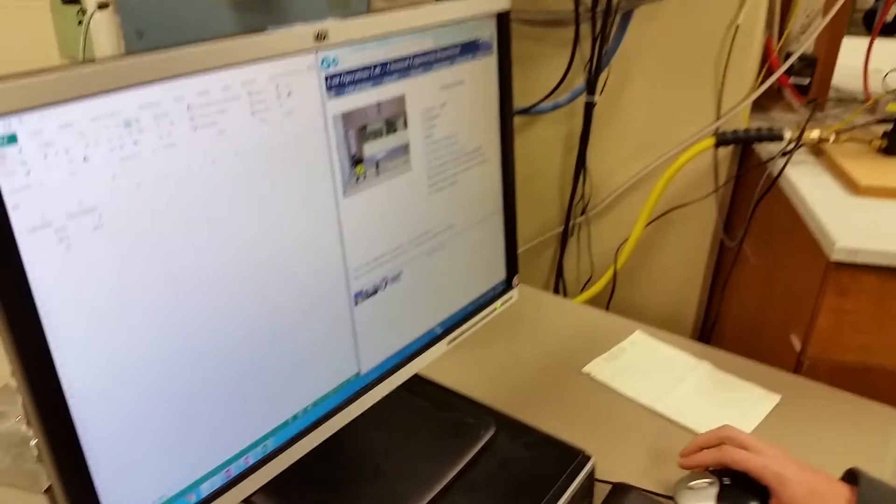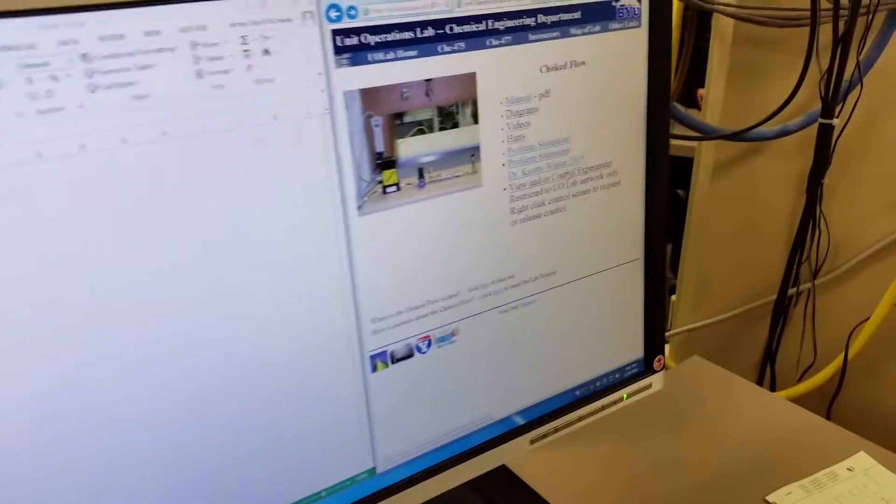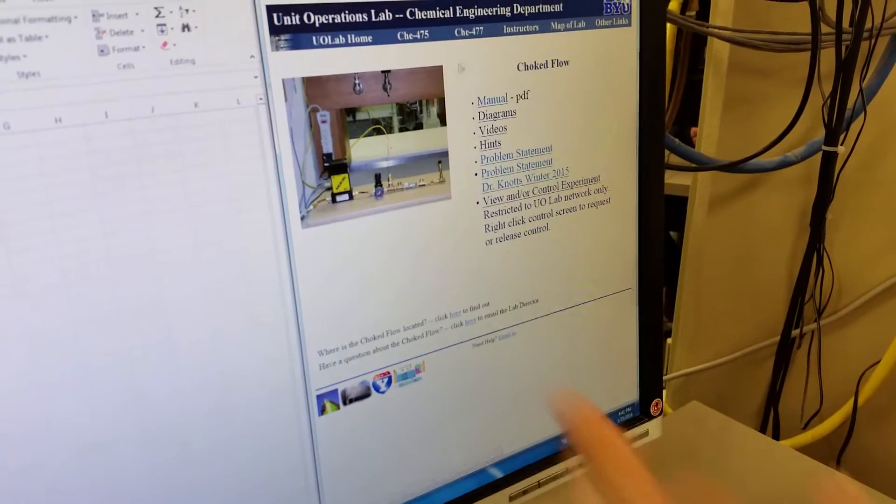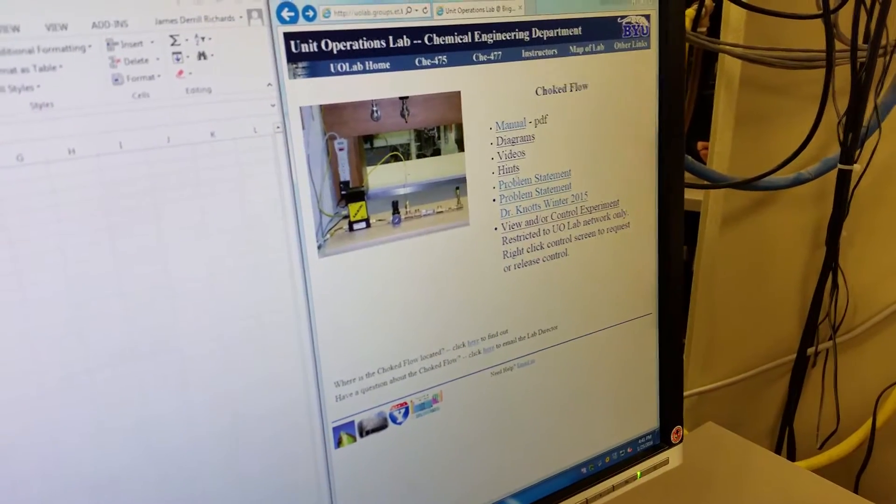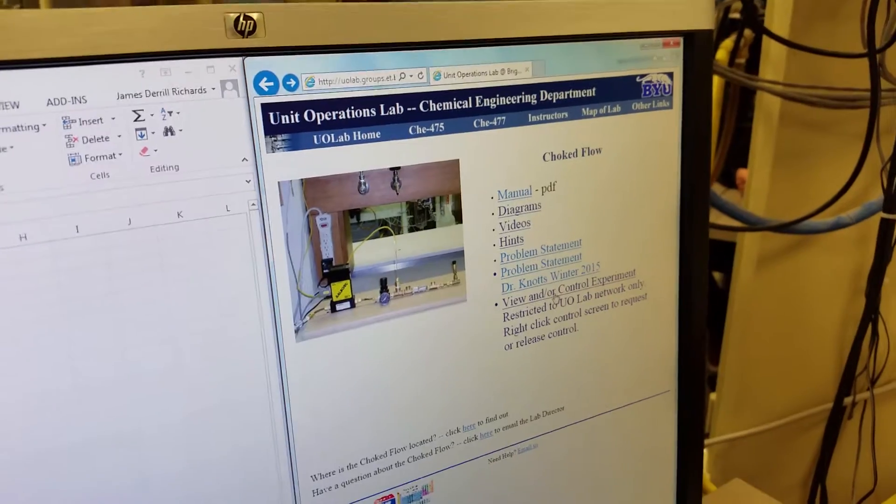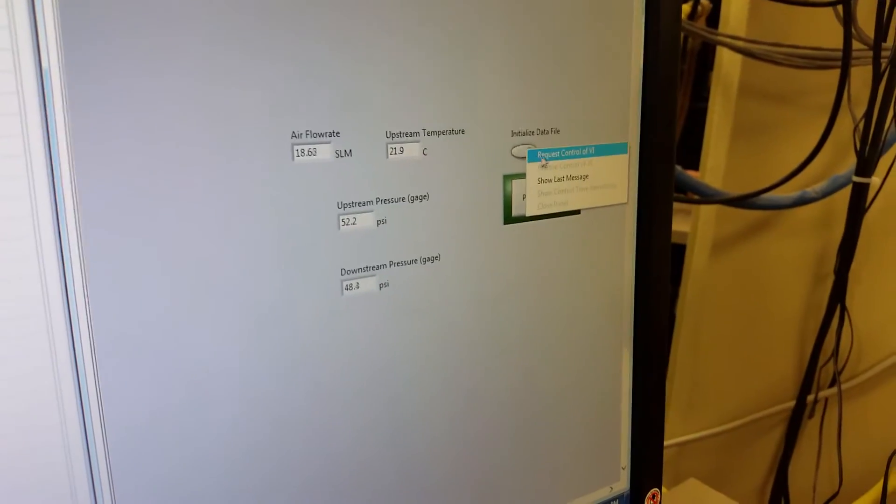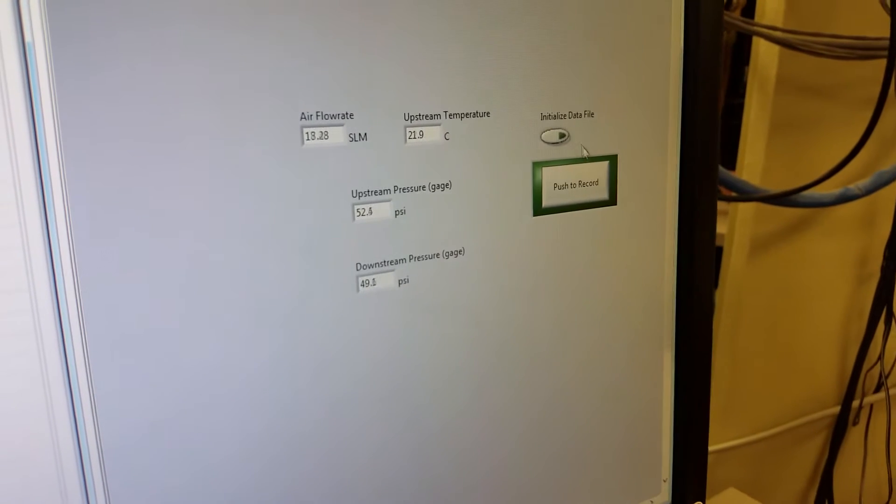You can take control of the experiment by going to the choked flow experiment in the UL lab webpage, and then clicking on view and control. You have to right-click up here and request control of the system.